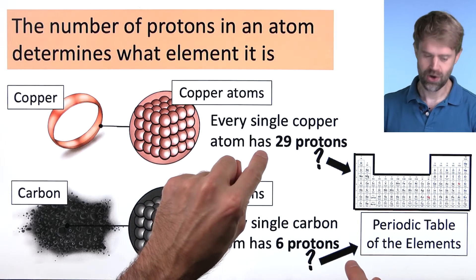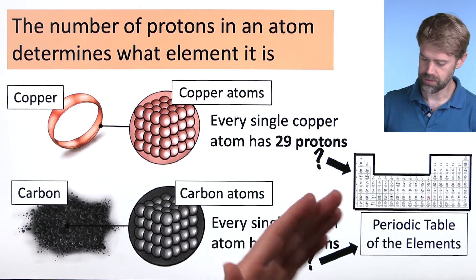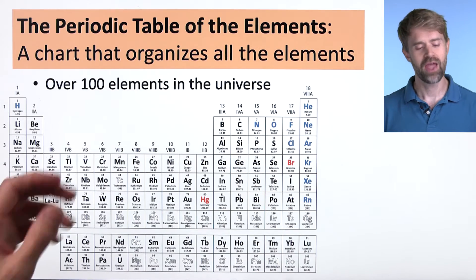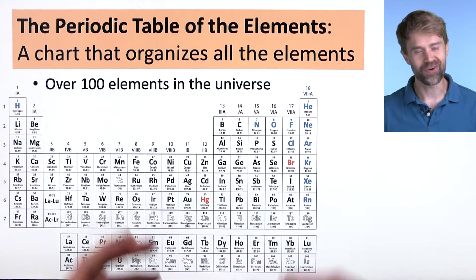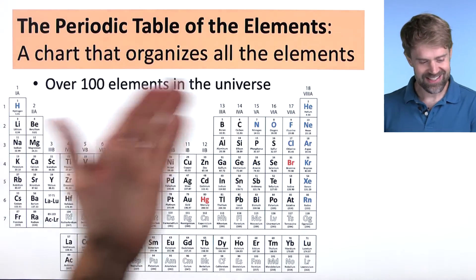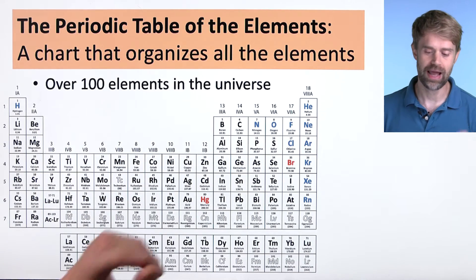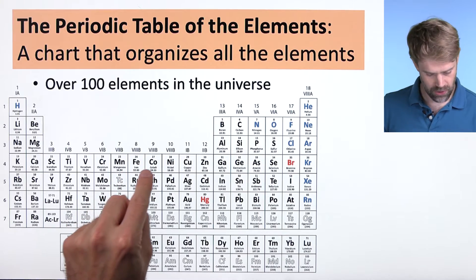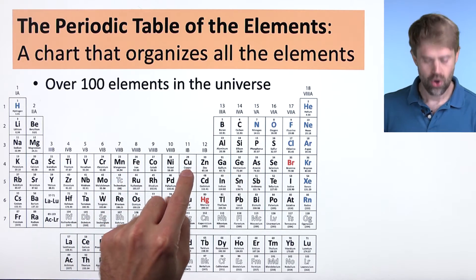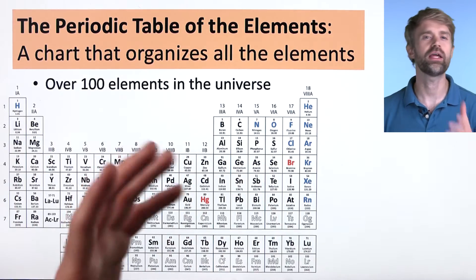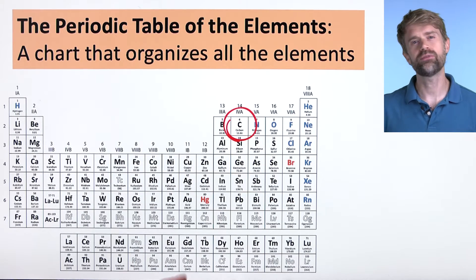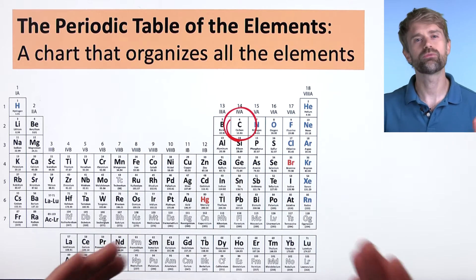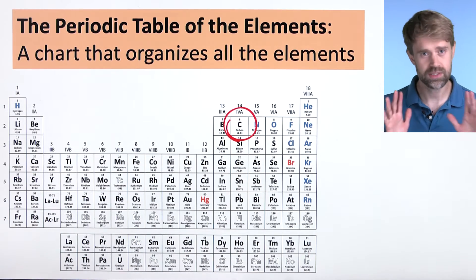Well, for that, we have to look at a chart called the periodic table of the elements. And here it is. The periodic table of the elements is a chart or a table that organizes all the elements. There are over a hundred elements in the universe and on this table. And each element has its own little square. We'll talk about this in much more detail in another video. The periodic table gives us important information about each element, including the number of protons that it has. So let's take a closer look.